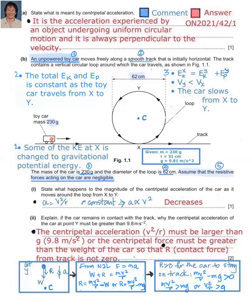The toy car is unpowered. This means that as the toy car moves along the horizontal track, the kinetic energy will not increase, because unpowered means no work is done on the toy car to increase kinetic energy. Smooth track means there is no frictional force. The lack of frictional force and negligible resistive forces means no work is done against friction or resistive forces, so the kinetic energy of the car remains constant when moving along the horizontal track.